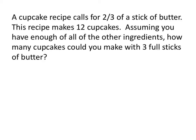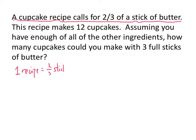So in this case, we want to take the sentences that they give us and translate that into some conversion factors. Our first sentence tells us a cupcake recipe calls for two-thirds of a stick of butter — I'm going to interpret that as one recipe equals two-thirds of a stick. They're telling us to disregard all the other ingredients like flour or eggs, just the butter. They also tell us the recipe makes 12 cupcakes, so that translates to one recipe equals 12 cupcakes.